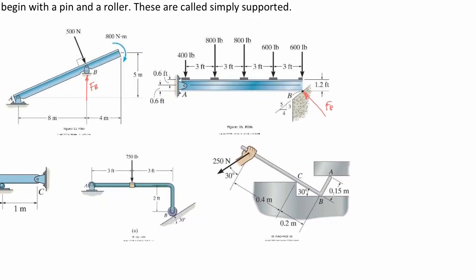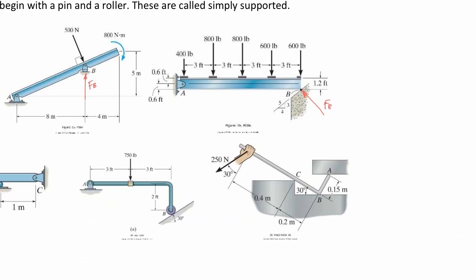The last support type to consider here is frictionless surfaces. Frictionless surfaces act like a roller — the force is going to be perpendicular to the contact surface. So at contact point A, the force is perpendicular to that surface; same with point B, giving force A and force B. Force C is interesting — it is still a frictionless support, but the contact surface is now the bar itself. So the force at C is perpendicular to the bar, drawn accordingly — perpendicular to the contact surface.